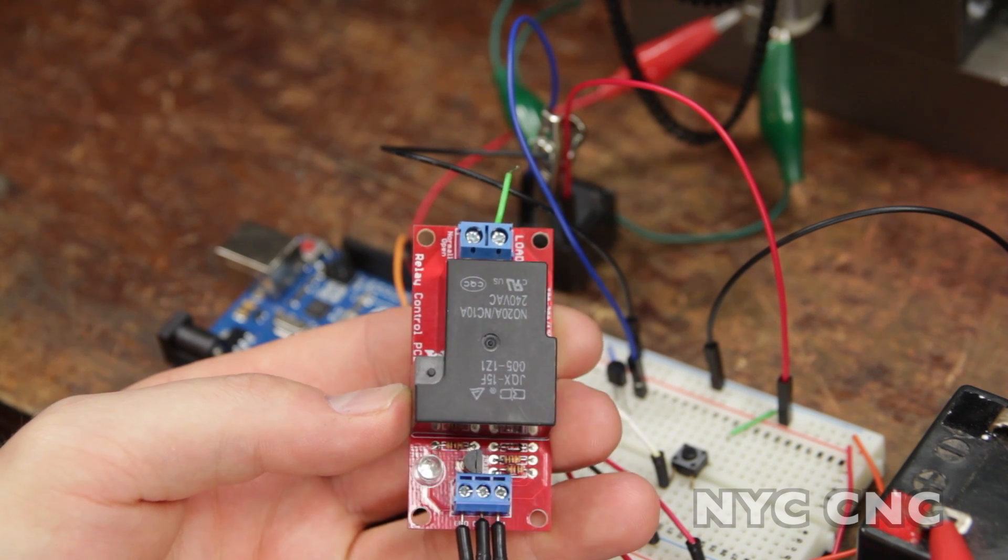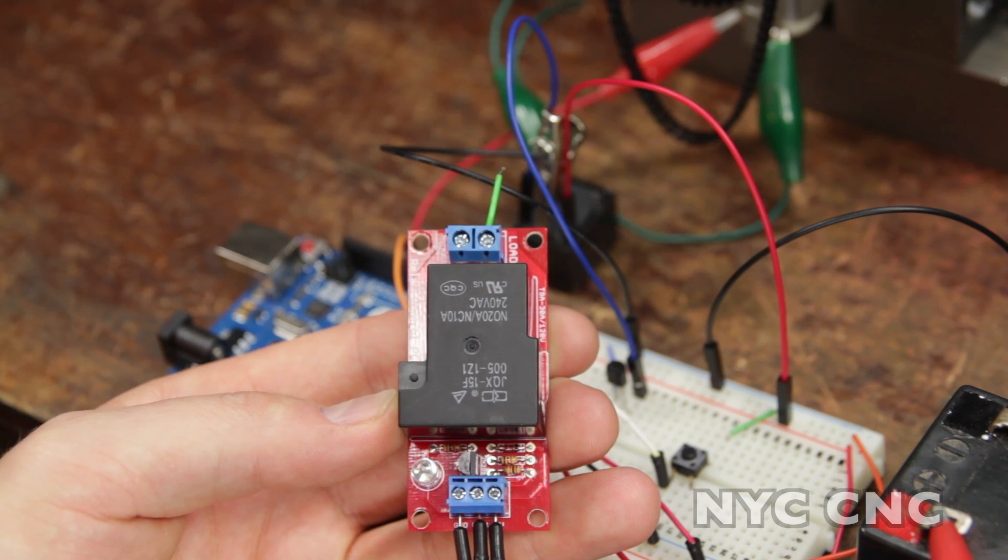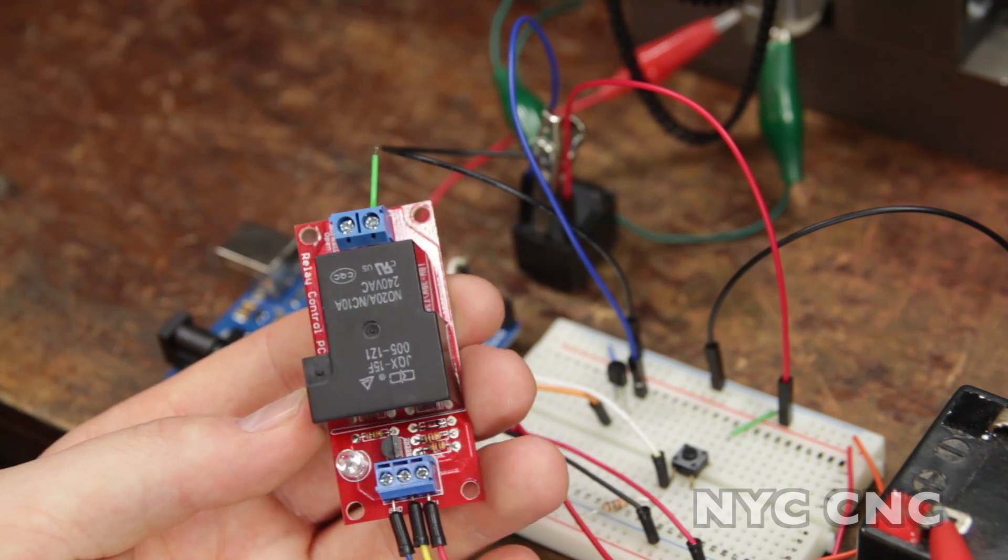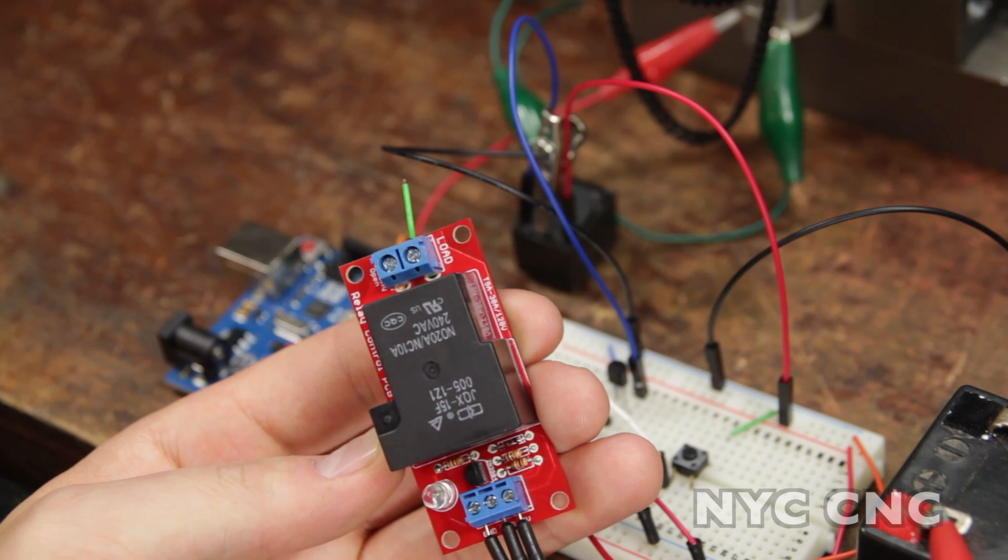If you're interested in using a relay with your microcontroller like an Arduino or Raspberry Pi and you don't want to deal with the hassle of the wires and the transistor, check out this kit from Sparkfun called the beefcake relay control board.